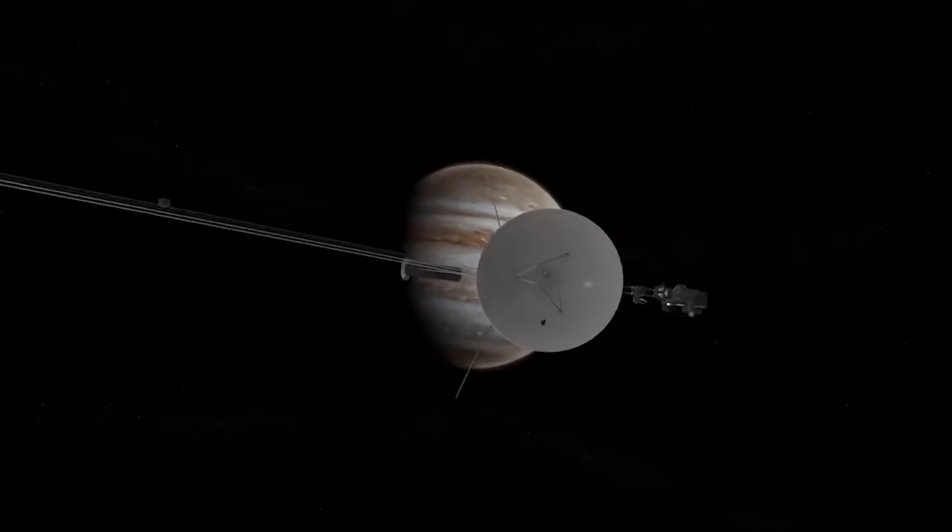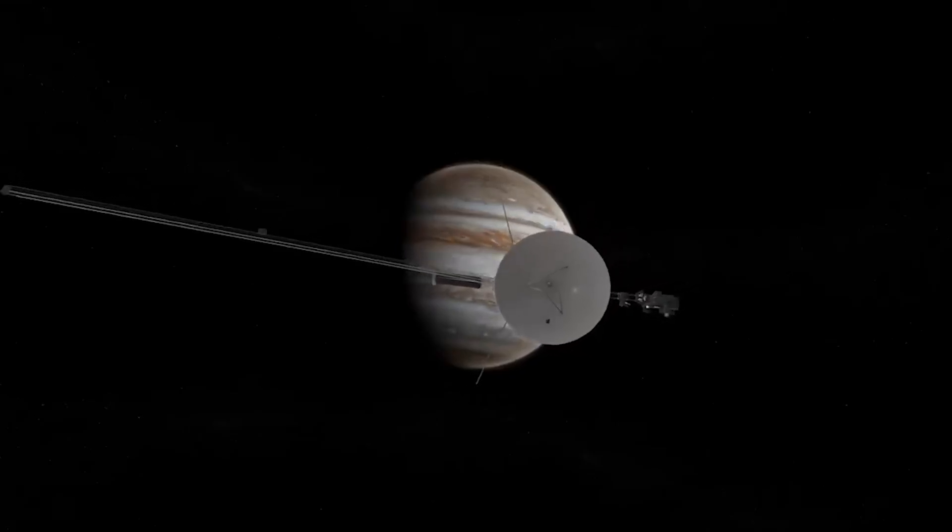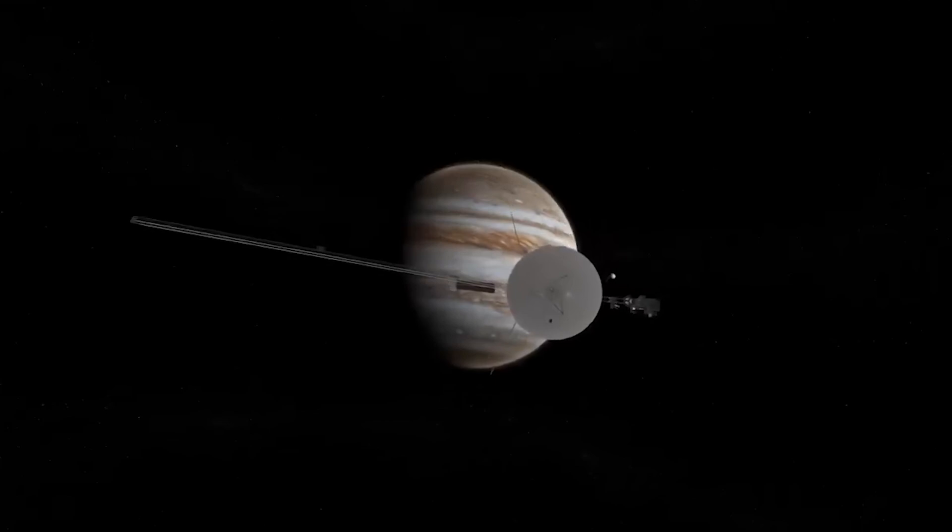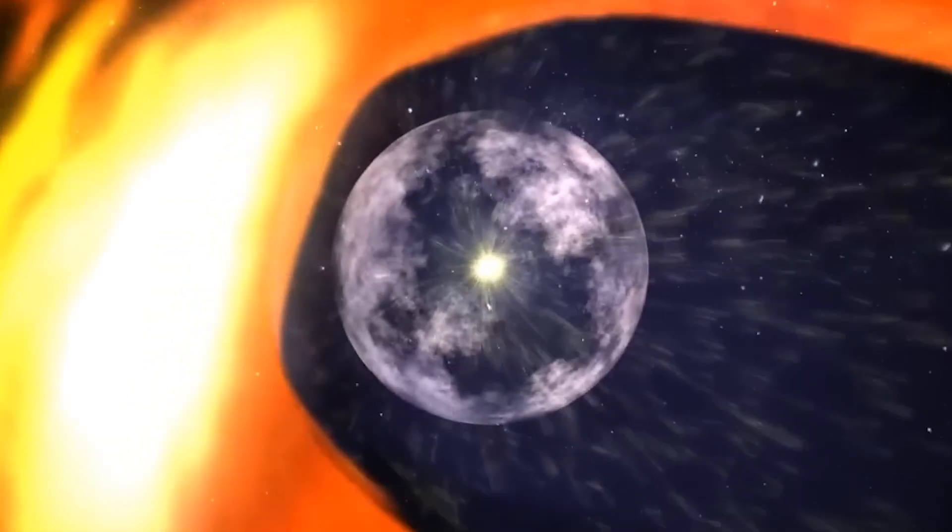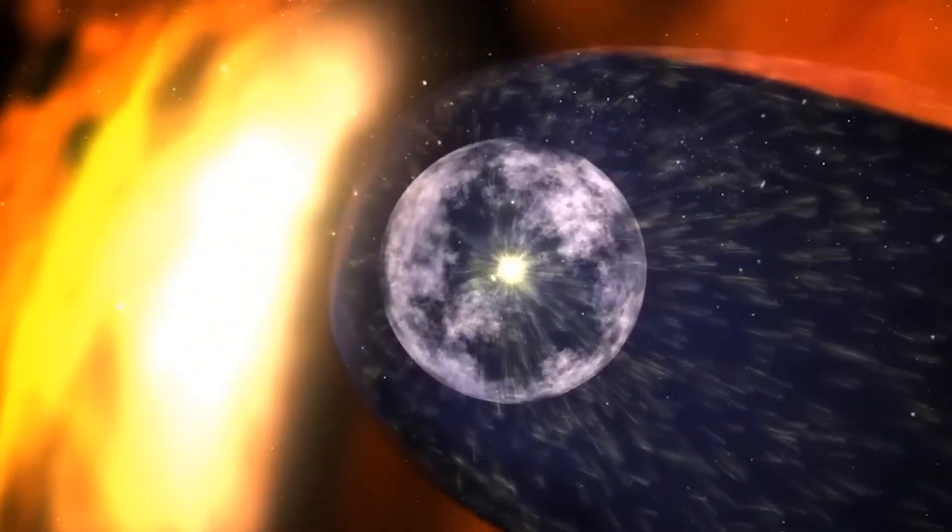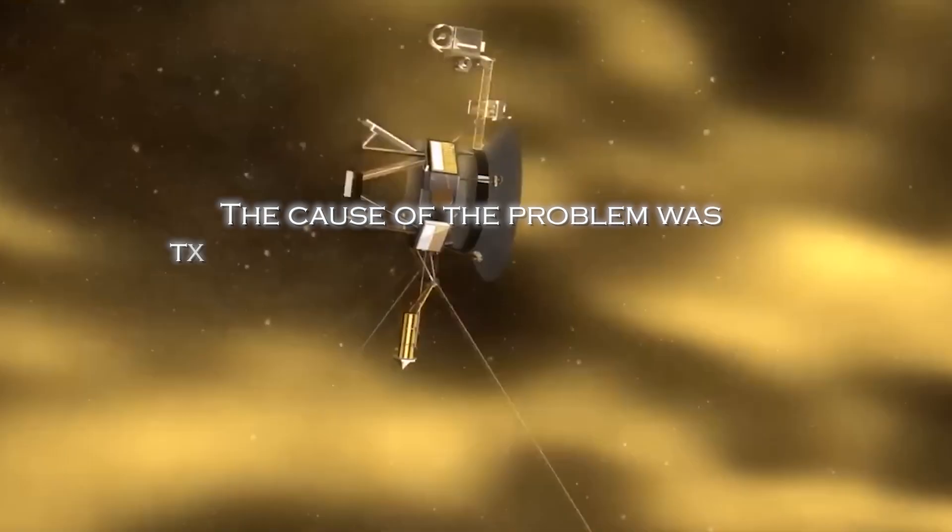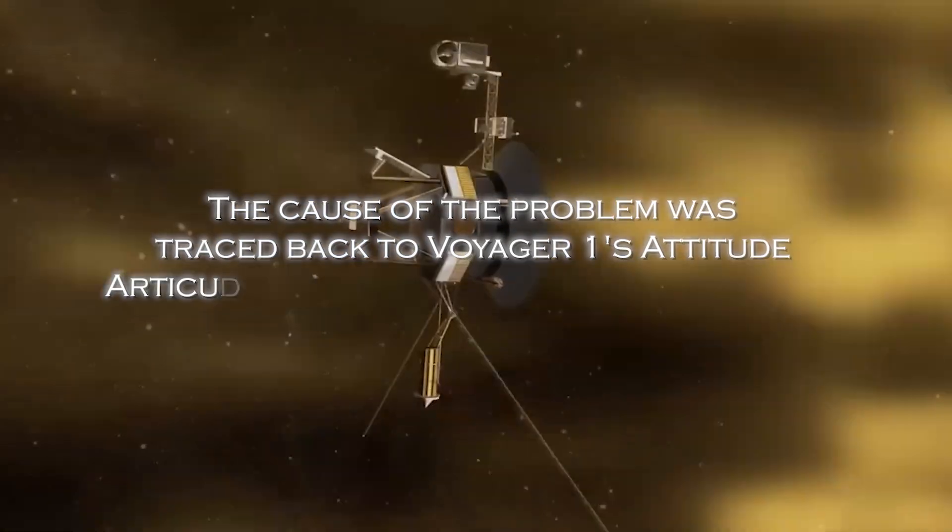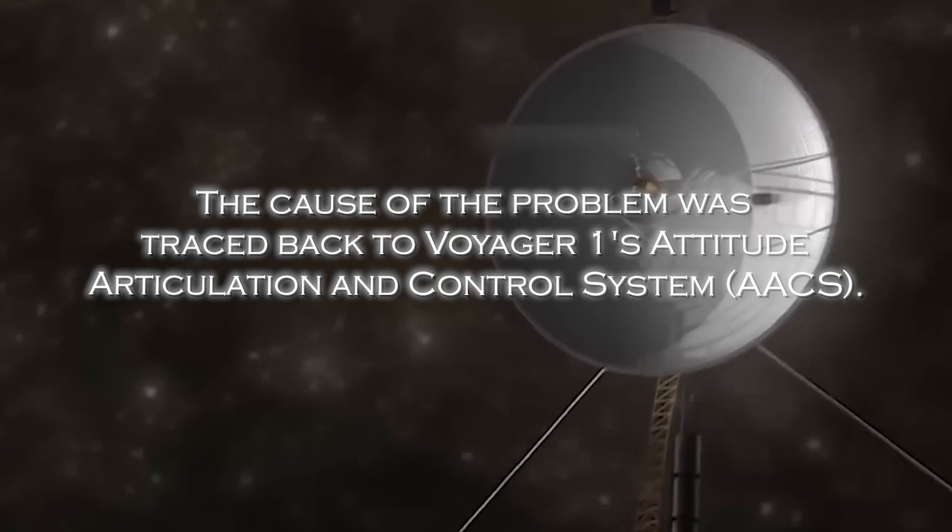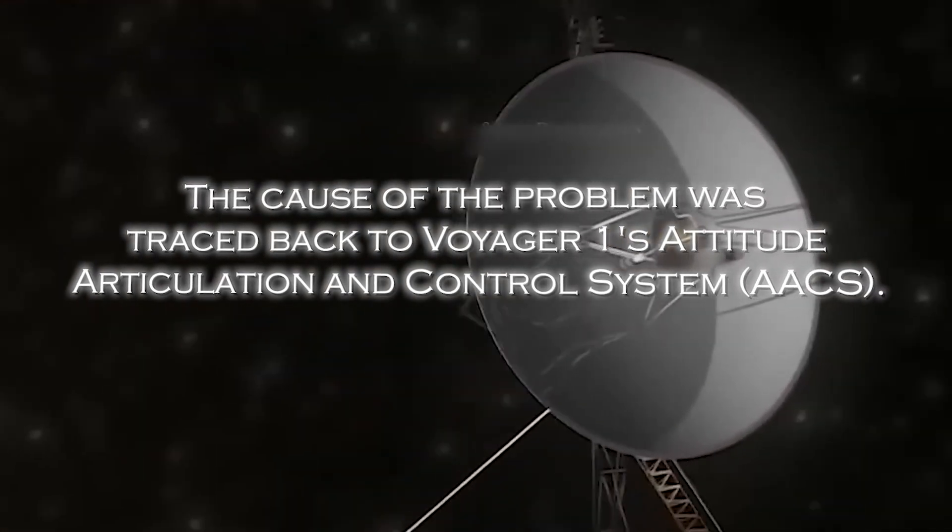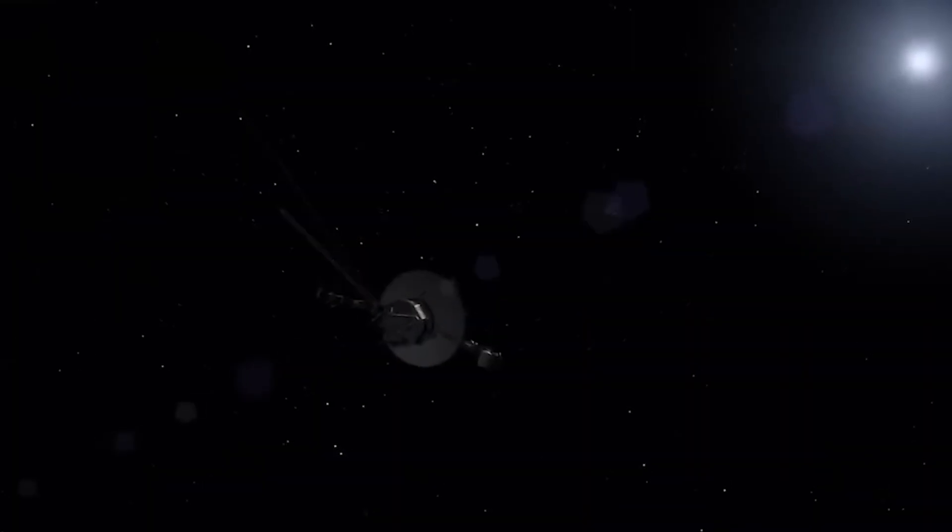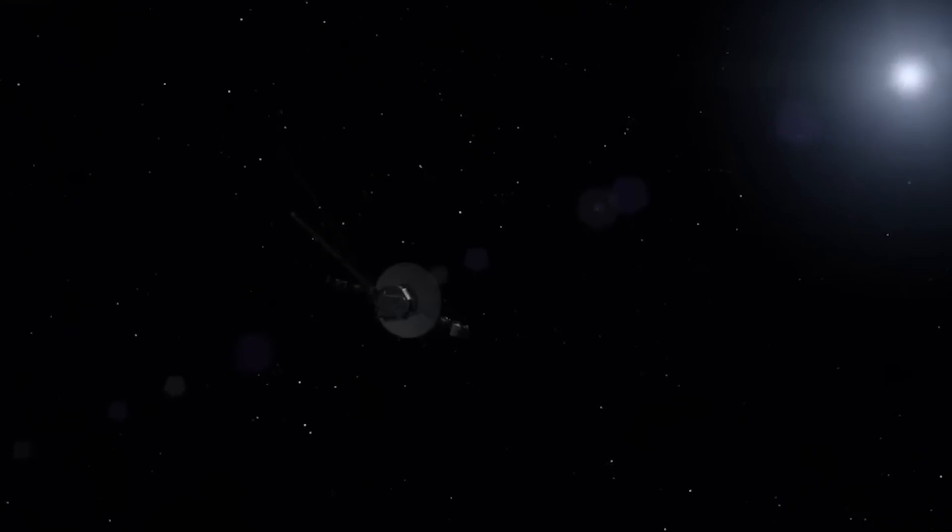After months of receiving encrypted data from the spacecraft, scientists and engineers were finally able to restore clarity and reliability to the information coming from the far reaches of interstellar space. The cause of the problem was traced back to Voyager 1's Attitude Articulation and Control System, or AACS, especially an onboard computer that was supposed to be inactive.